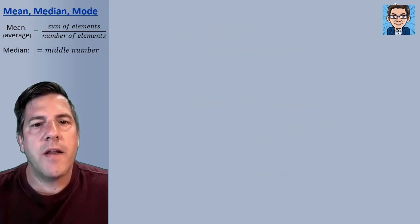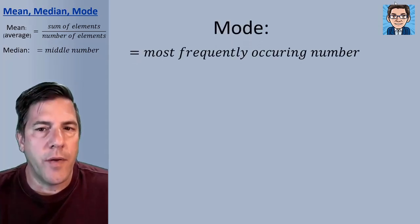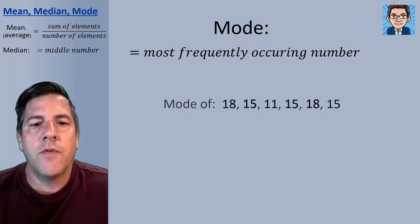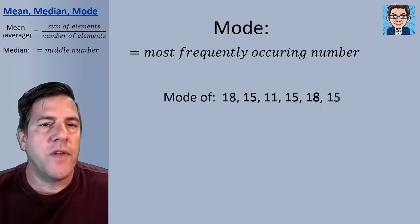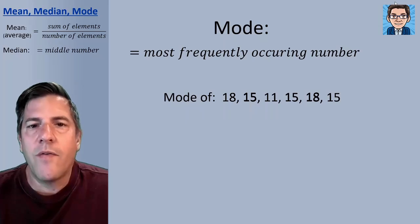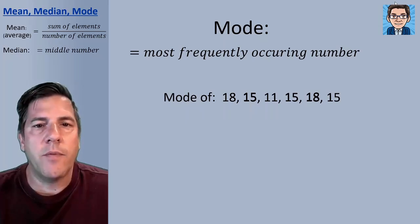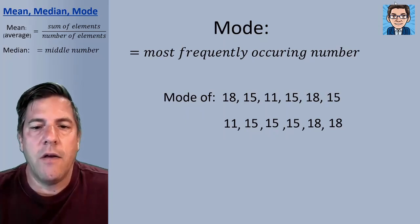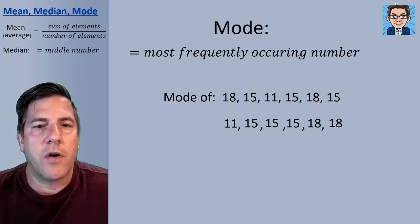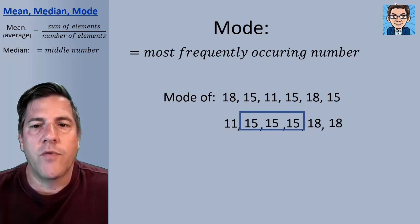The last item is just the mode. The mode is simply the most frequently occurring number. If you look at these numbers here, you can see that 15 occurs most often. When you have a very long list of numbers, it might help to put them in order so all the same numbers are next to each other. You can see that 15 occurs three times, 18 occurs twice, and 11 occurs once. So 15 is going to be the mode, the most frequently occurring number.